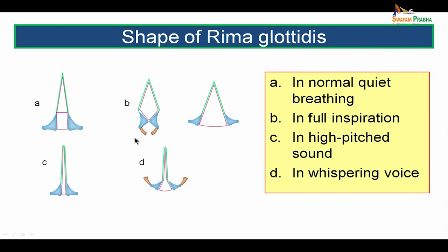Different shapes of the rima glottidis: during quiet normal breathing it is symmetrical pentagonal with the intermembranous part being elongated triangular and the intercartilaginous part rectangular. During full inspiration it is diamond-shaped due to abduction of the vocal cords, with the entire glottis maximally opened. During high-pitched sound it is a linear chink due to abduction of the vocal cords. During whispering voice it is an inverted funnel shape with the intermembranous part highly adducted and the intercartilaginous part expanded triangularly.